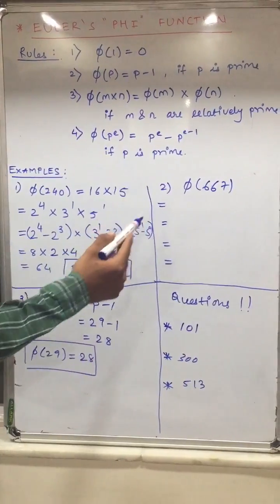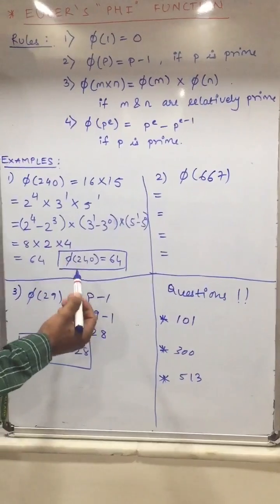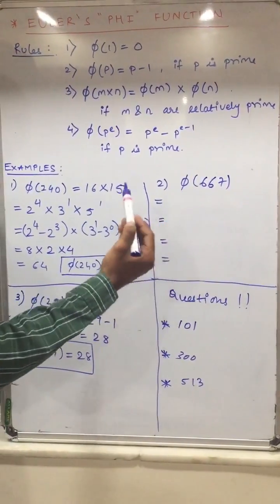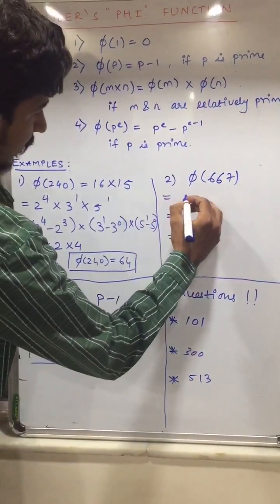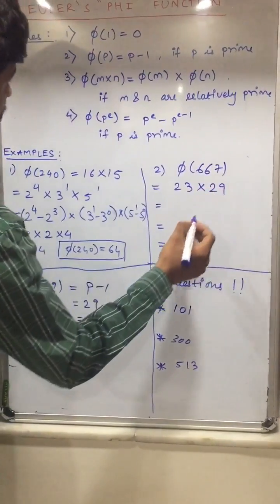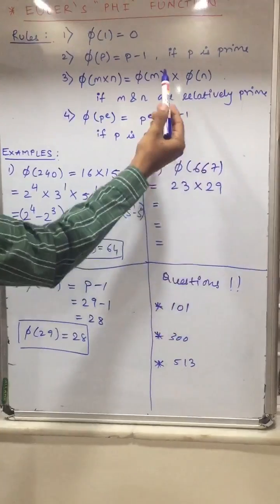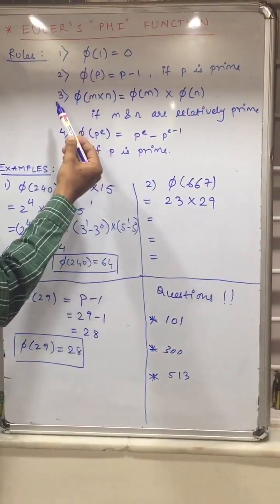Now let's move on to another example, phi of 667. As I said, you have to divide the number into different factors. So it will be 23 into 29. As you can see, both the numbers are relatively prime to each other, so you have to solve by rule number 3.